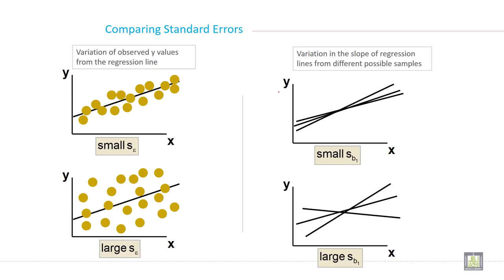Comparing standard errors. Variation of observed Y values from the regression line. See this is a small variation because all the dots are closer, all the dots are near to each other. So you can say this is a smaller variation, and if the dots are far from each other, the distance is big between two dots, then it is called large variation between the two variables, between the two values.